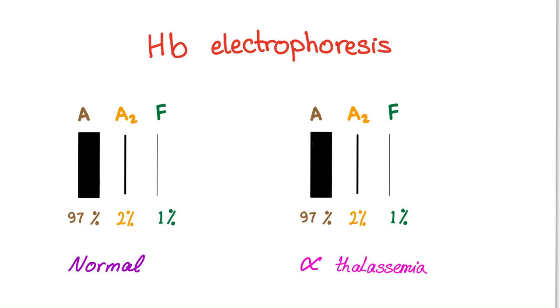Hemoglobin electrophoresis tells me the percentage of each type of hemoglobin. Normally we have 97% of hemoglobin A, 2% of hemoglobin A2, 1% of hemoglobin F. However, in alpha thalassemia trait, I'm talking about the trait, 97% hemoglobin A, 2% hemoglobin A2, 1% hemoglobin F. So in alpha thalassemia trait, hemoglobin electrophoresis is completely normal.